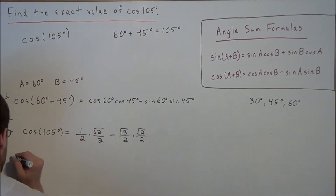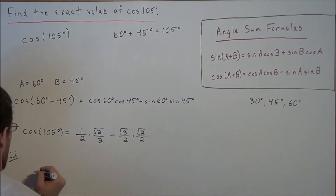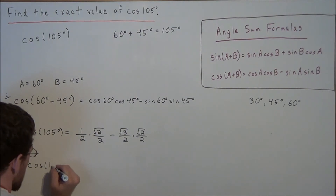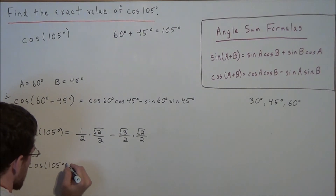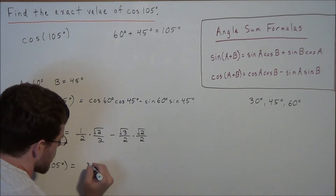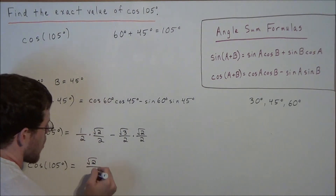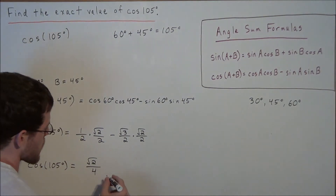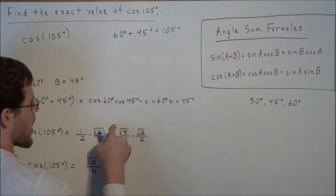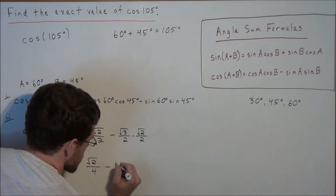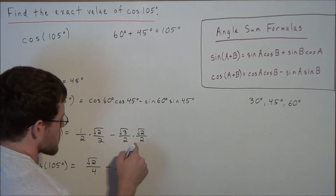So now for the next line, we can simplify a little bit more. We have the cosine of 105 degrees is equal to — 1 times radical 2 is radical 2, over 2 times 2 is 4. So we have radical 2 over 4 minus, and now we have radical 3 times radical 2, that's equal to radical 6 over 2 times 2, which is 4.